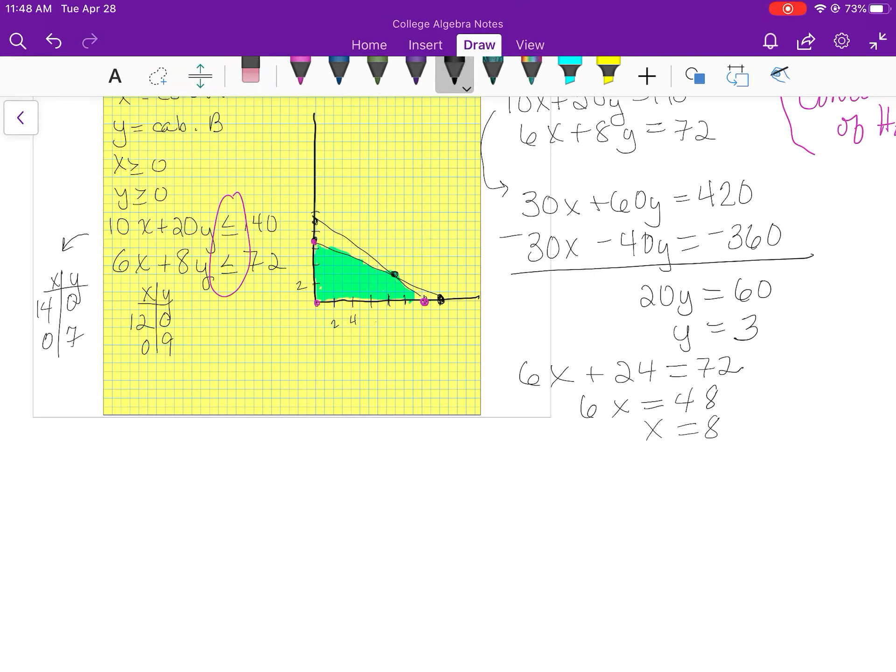Now I'm ready to go ahead and set up my table. I'm going to go ahead and identify these points as well. I think that's going to help me out before I get going. And that point will be (0,7).